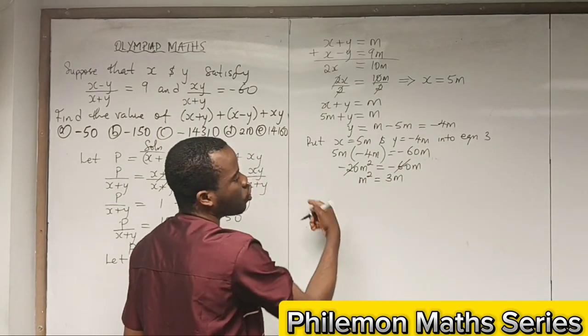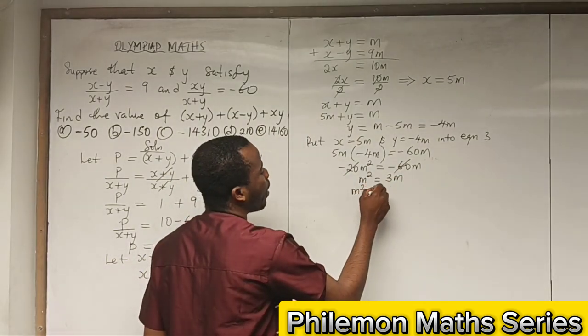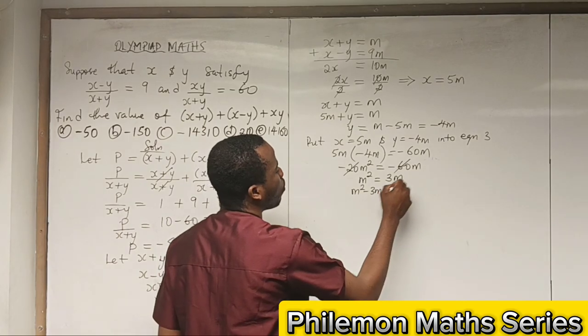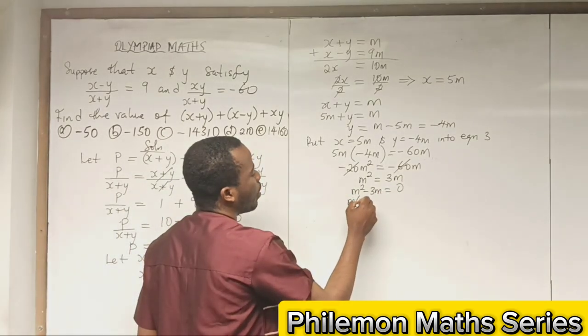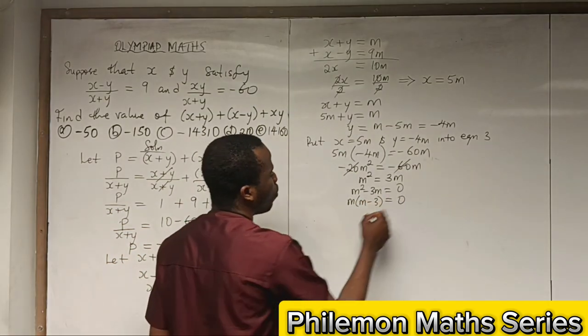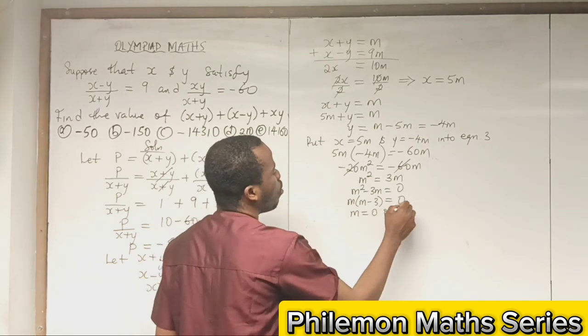Subtract 3m from both sides so that m² - 3m = 0. Factorize: m(m - 3) = 0, so m = 0 or m - 3 = 0, which gives m = 0 or m = 3.